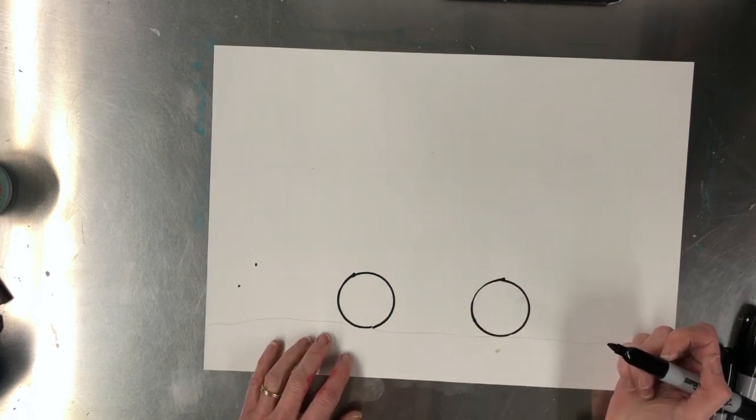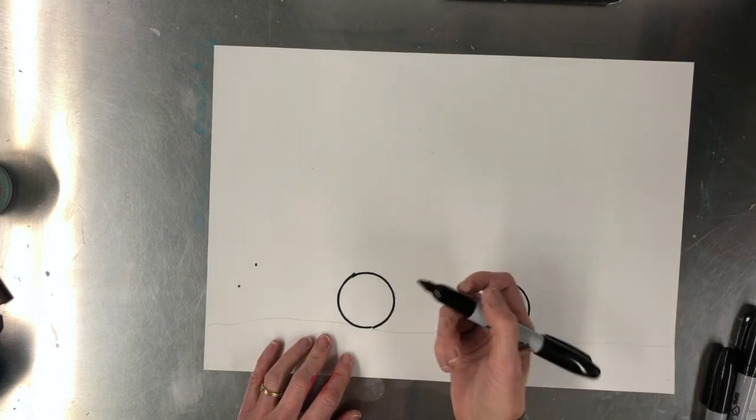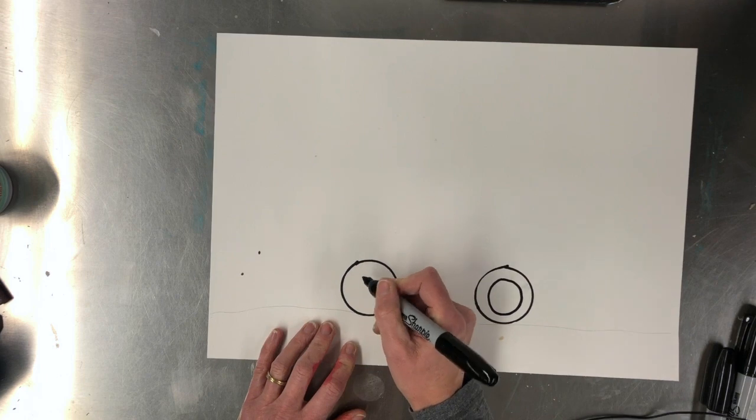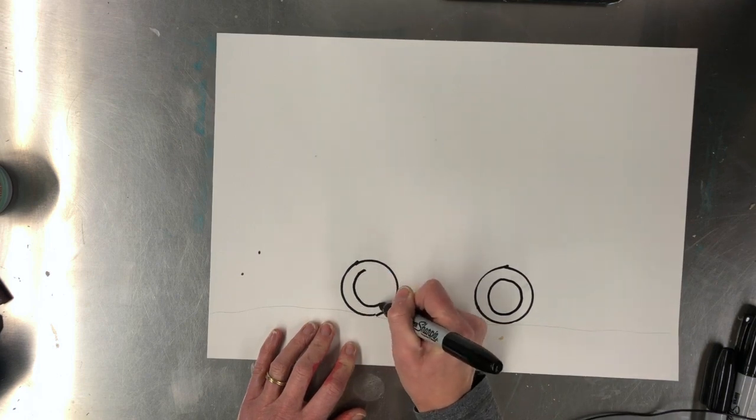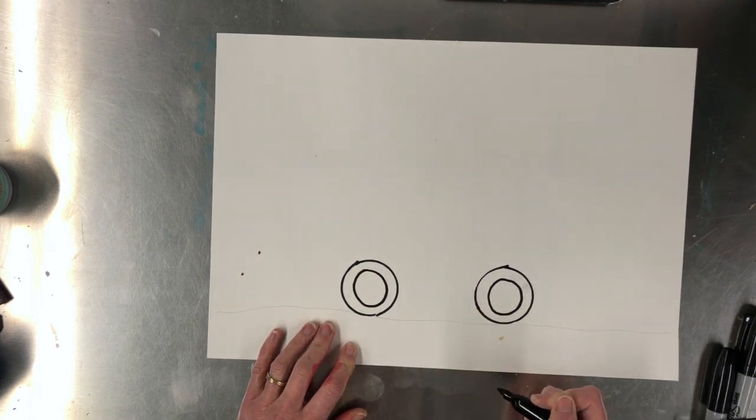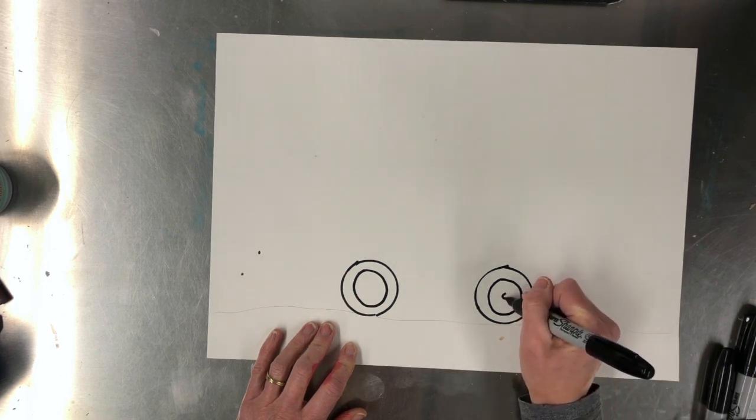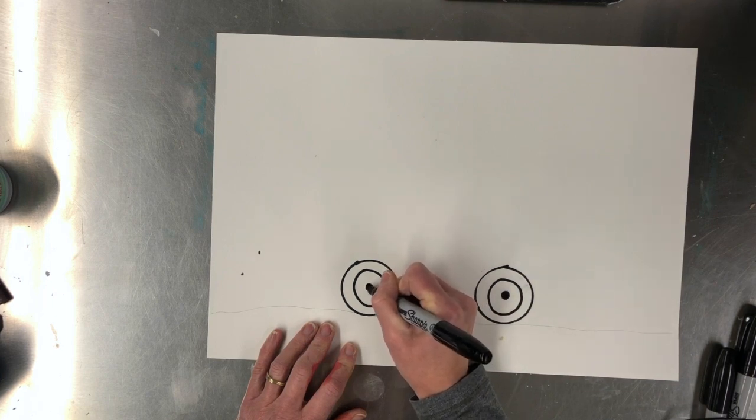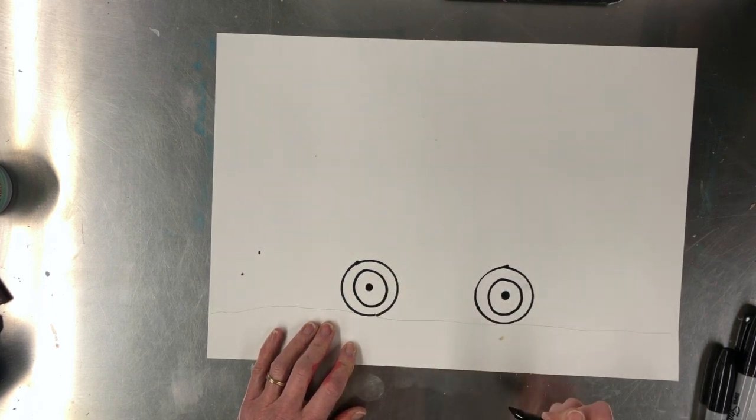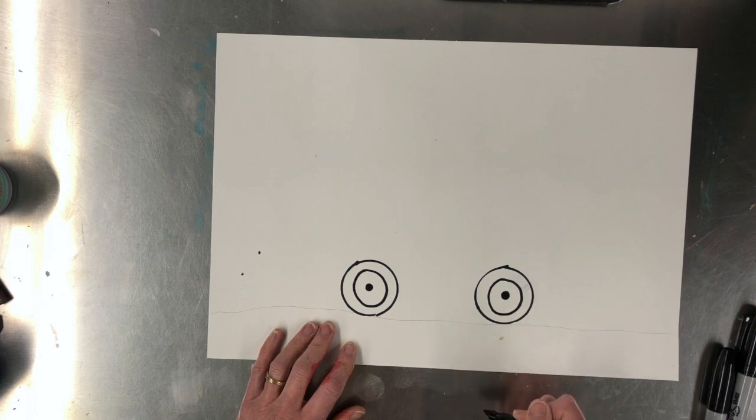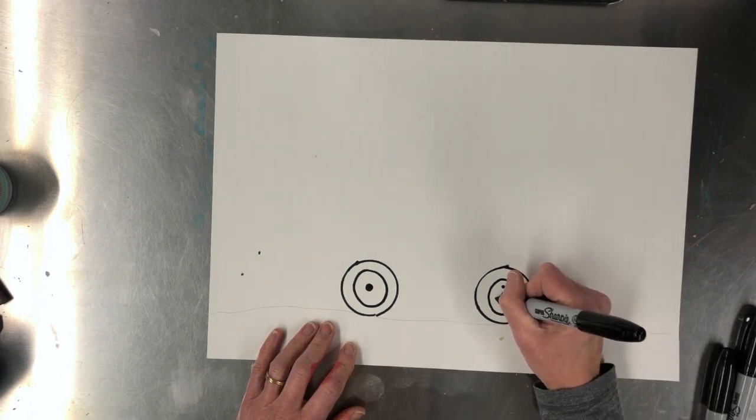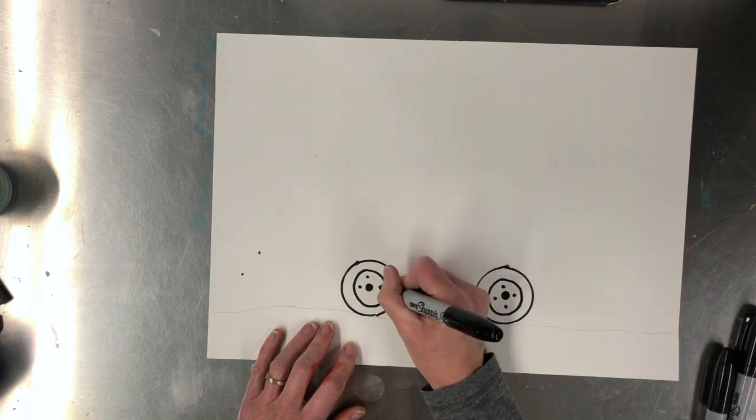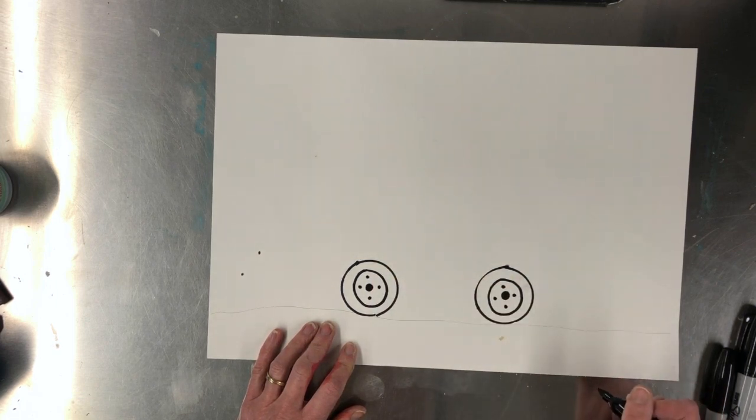So we're going to start drawing our truck and I want to start with the wheel. So I'm going to make a circle in the circle. And then we're going to make a circle in that circle and you can fill that one in. Then you're going to make little nuts for the tire. They hold on the tire like so.